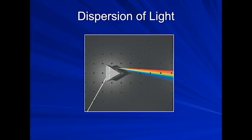Next, let's take a look at the dispersion of light. We've probably all seen pictures like this before of white light going into a prism and being split into the separate colors. Why does this happen?